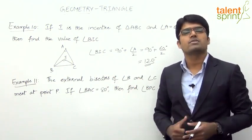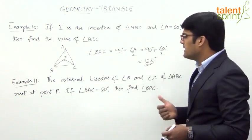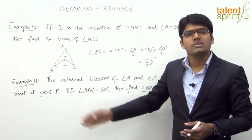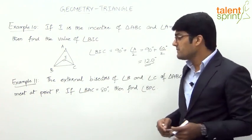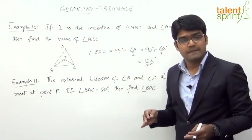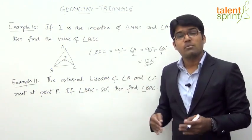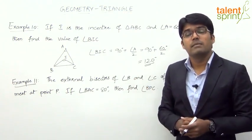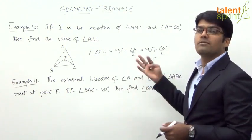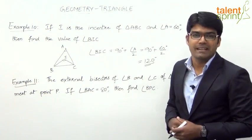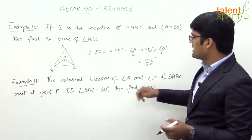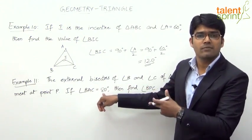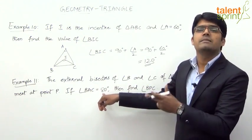Again, without even drawing the diagram, you can mark the answer. The angle made by any side with the point of intersection of its external angle bisectors is equal to 90 degrees minus half of the vertical angle. The vertical angle here is 80 degrees, so half of that is 40 degrees. Therefore, 90 minus 40 equals 50 degrees — that is the answer.